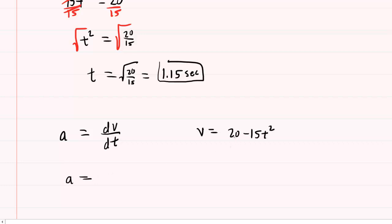So acceleration will equal the derivative of 20 is zero, and then the power rule applies again. So multiply the power by the coefficient to give you 30, and now you have t raised to the power of 1. This can be simplified to just negative 30t.